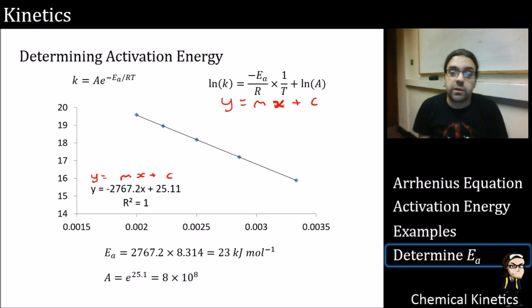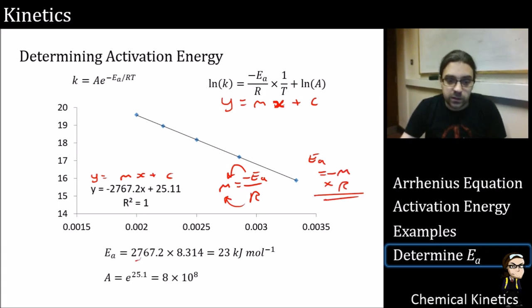So we can figure out the value of m, the gradient. So if that m is equal to minus activation energy over r, then to get the activation energy out, we just simply take r to the other side, take the minus to the other side, and we get that is equal to minus the gradient times r, which we can calculate here. We take that gradient, multiply it by the gas constant, and work it out into kilojoules per mole. It's really straightforward.